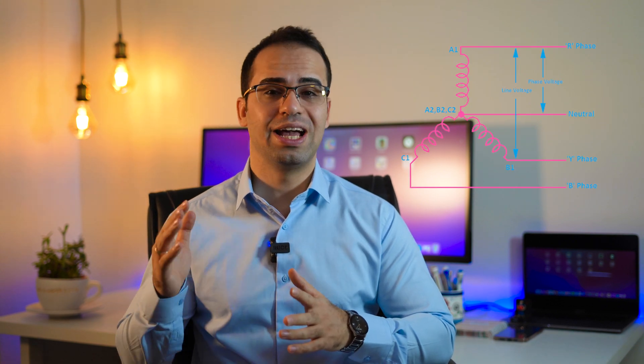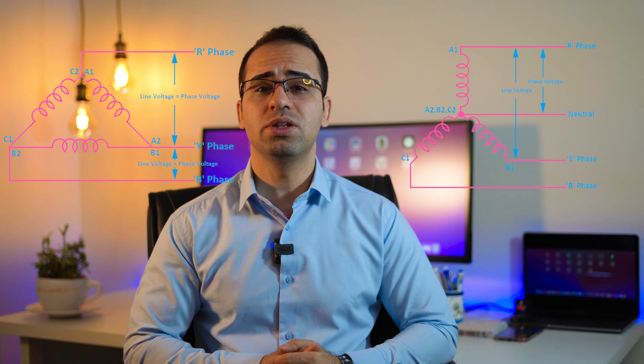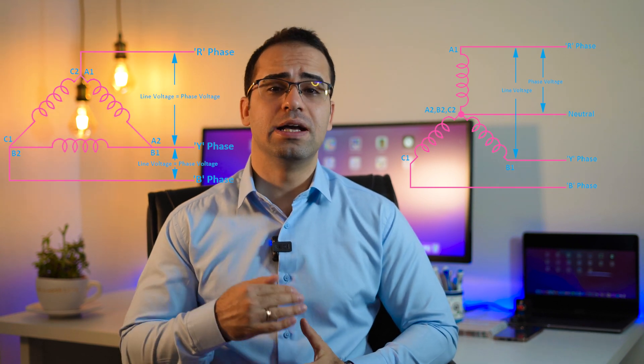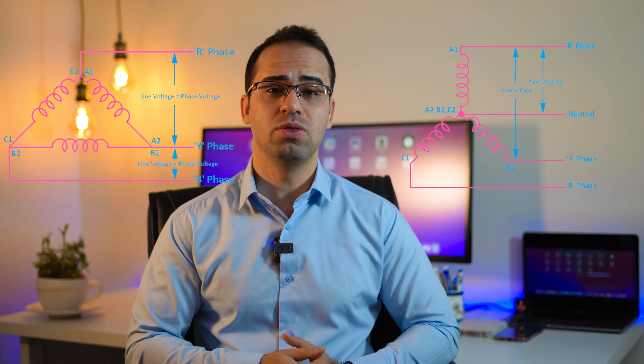Some three-phase power supplies use a fourth wire, a neutral wire. The two most common three-phase system configurations are star and delta. A delta configuration has only three wires, while a star configuration may have a fourth neutral wire. Single-phase power supplies have a neutral wire as well. Both single-phase and three-phase power distribution systems have roles for which they are well suited, but the two types of systems are pretty different from each other.